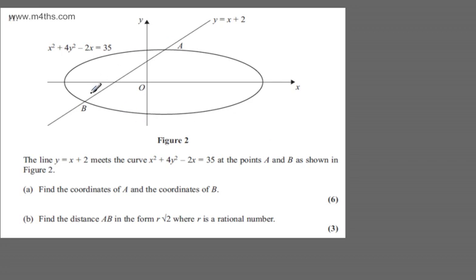So we've got A here and B here. In part A, for six marks, we need to find the coordinates of A and the coordinates of B. So we're looking at simultaneous equations here. If we call the first one equation 1, we have y equals x plus 2. Equation 2 we have x squared plus 4y squared minus 2x equals 35.